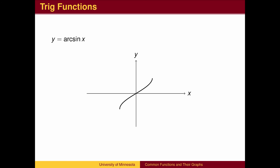The inverse of the sine function, also called the arcsine, outputs angles associated with sine values. The domain is the possible sine values from negative 1 to 1. The range is the angles in the fourth and first quadrants, from negative pi over 2 to pi over 2.